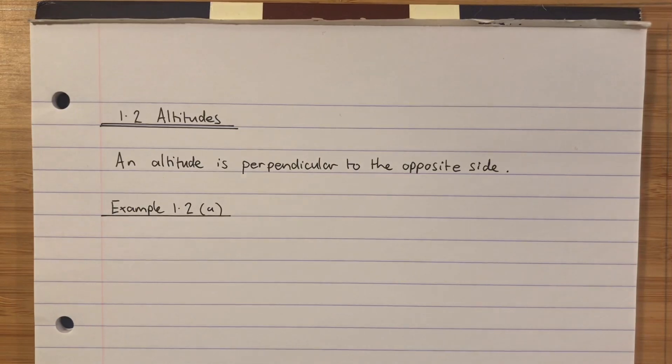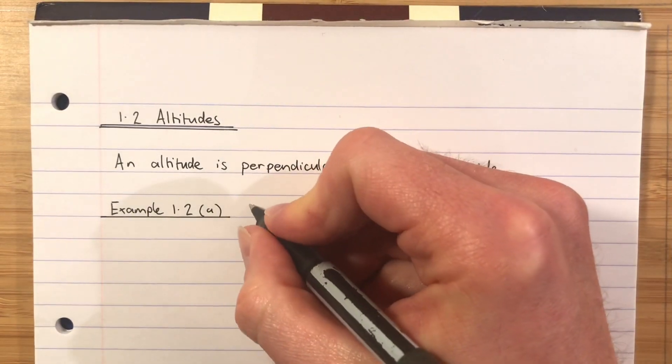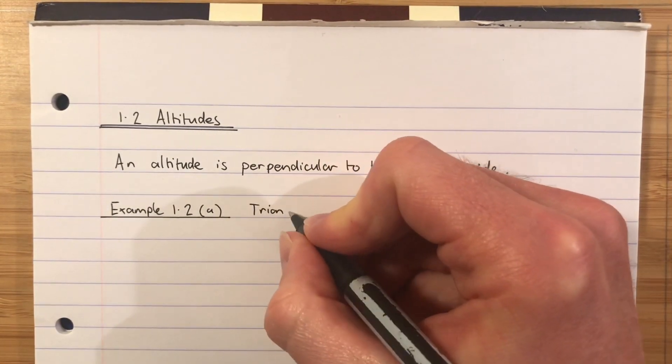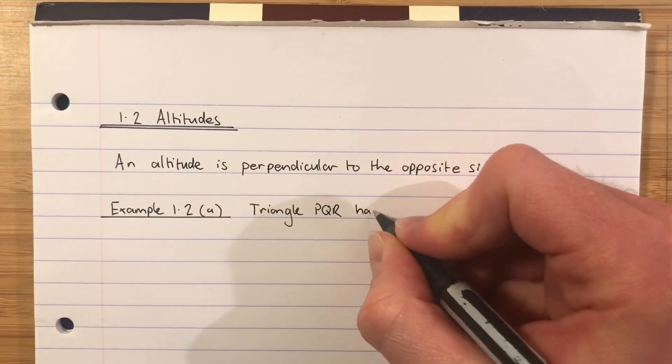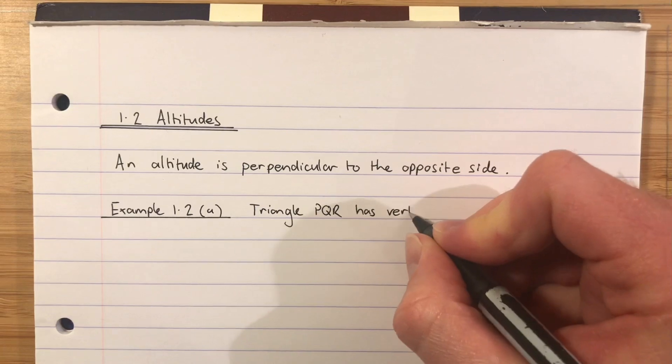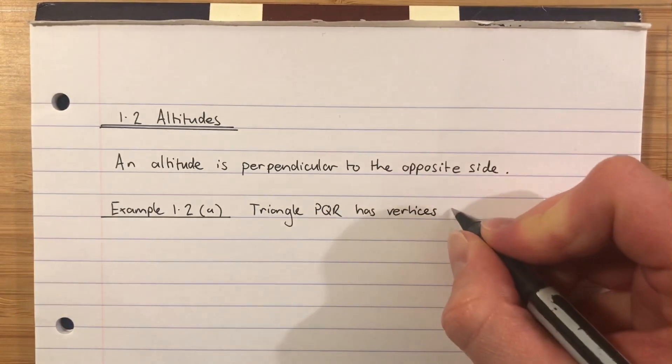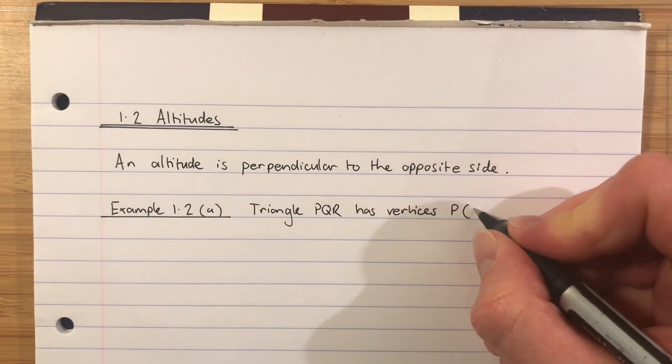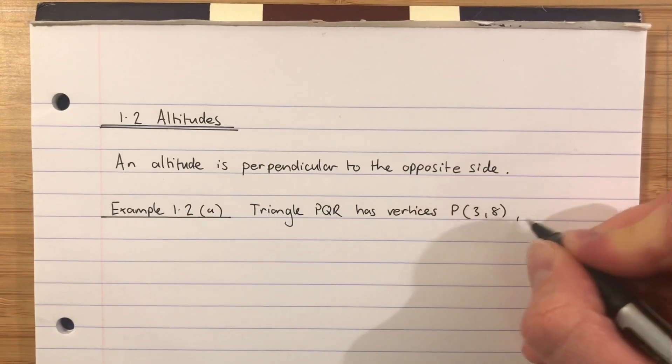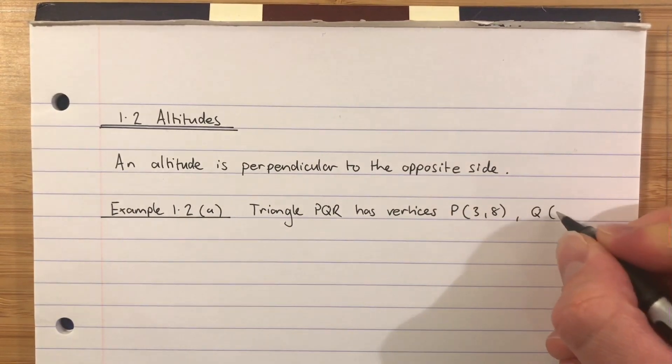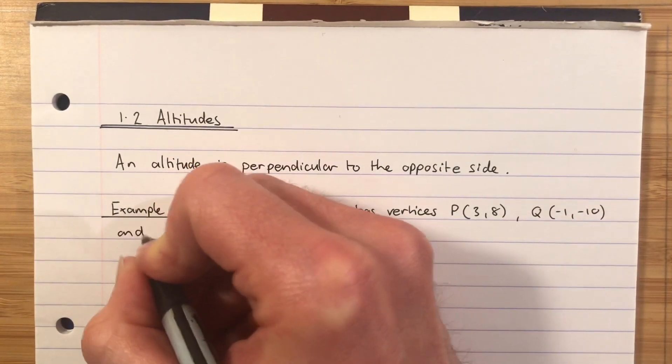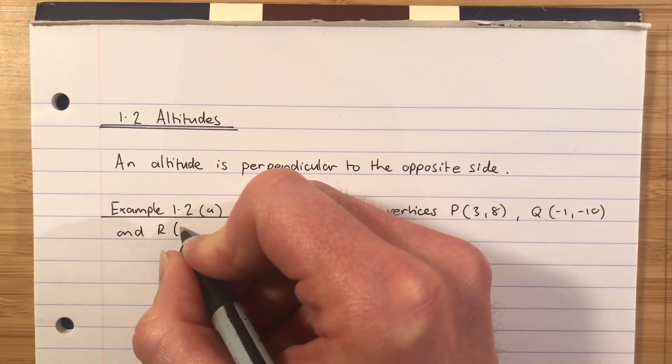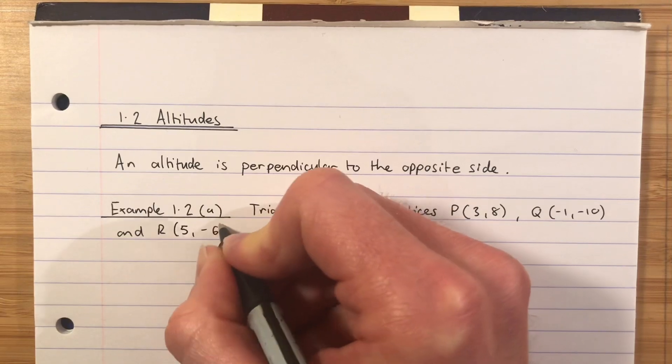Example 1.2a: triangle PQR has vertices P which is (3,8), Q which will be (-1,-10), and R which is (5,-6).